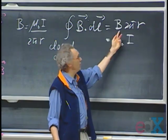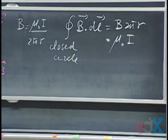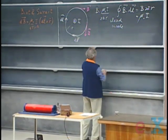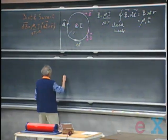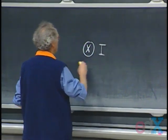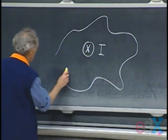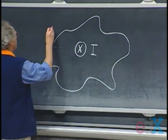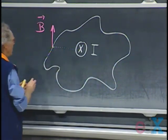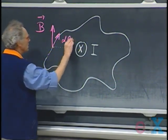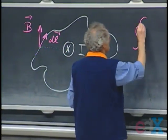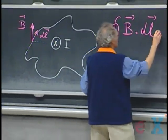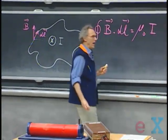You can see it right away because B is inversely proportional to R. It was Ampere who first recognized that you don't have to walk around in a circle to get μ₀I, but that you could walk around in any crooked path as long as it is a closed path. The closed loop integral of B dot DL equals μ₀ times I, which is known as Ampere's Law.